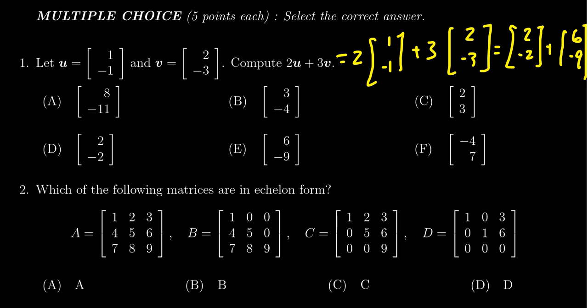Then we add these quantities together. In the first entry we get two plus six which is eight, and in the second component we get negative two minus nine which is negative eleven. Searching this amongst the multiple choice options, we see that the correct answer here would be choice A.